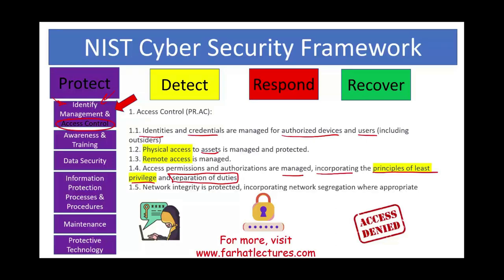Your network has to be protected. Network integrity is protected, incorporating network segregation where appropriate. To look at the big picture: the function is Protect, the category is Identity Management and Access Control, and the subcategories define what needs to be done. The big idea is to control access by knowing who is authorized and who is not, and by protecting your system.